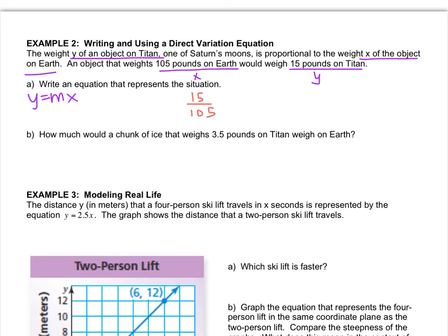Then I just have to reduce the fraction. I can clearly see that they both divide by 5, so that would give me 3, and 105 divided by 5 is 21. Then I know that 3 goes into 21 seven times, so that's actually the fraction one-seventh. The constant of proportionality, which we're now calling the slope, is one-seventh. So that gives me a formula of y equals one-seventh x. That's the equation.